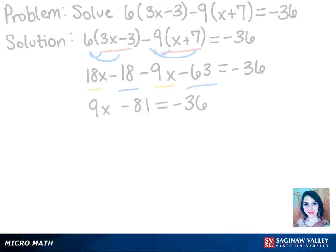We still want x by itself, so we have to add 81 to both sides so it will cancel out on the left, leaving us with 9x equals 45.